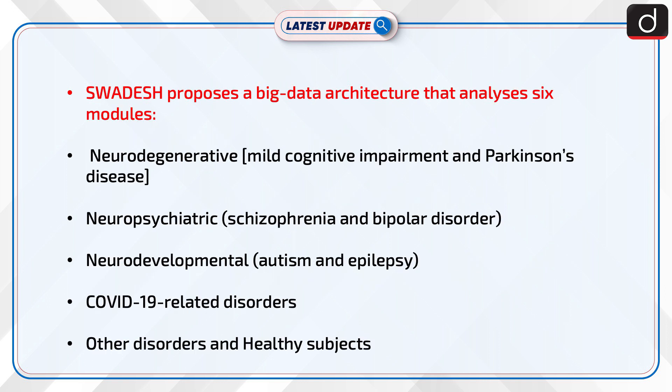Swadesh proposes a big data architecture that analyses six modules: Neurodegenerative, i.e. mild cognitive impairment and Parkinson's disease; Neuropsychiatric, i.e. schizophrenia and bipolar disorder; Neurodevelopmental, i.e. autism and epilepsy; COVID-19 related disorders; other disorders; and healthy subjects.